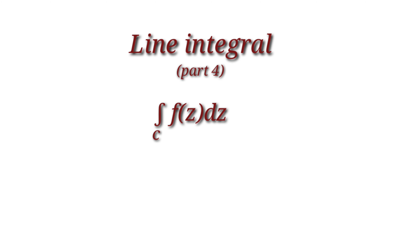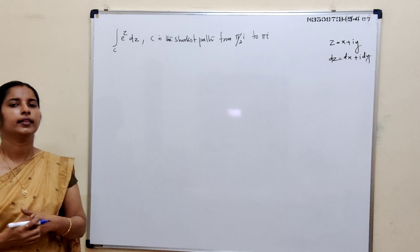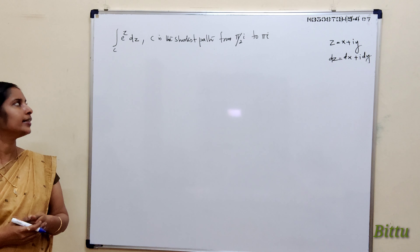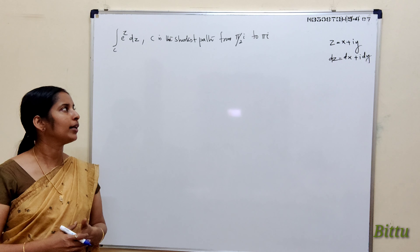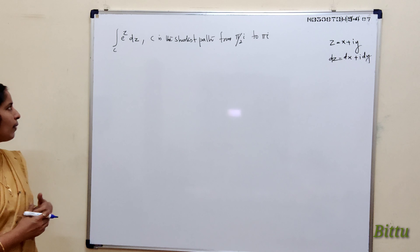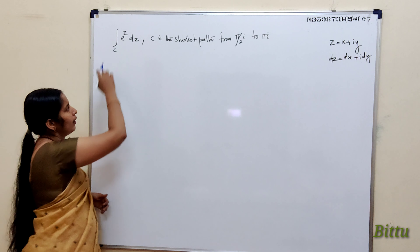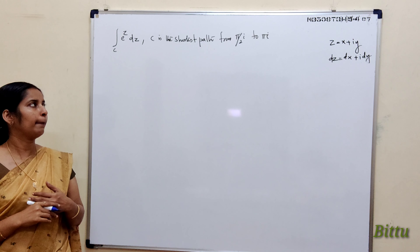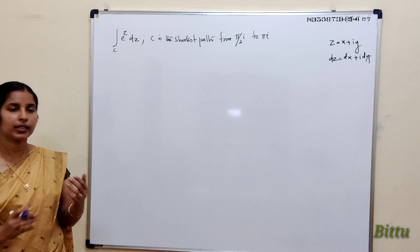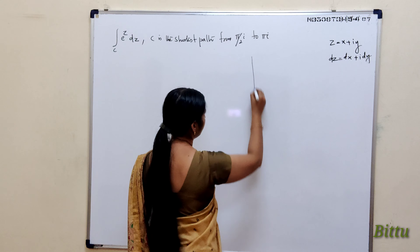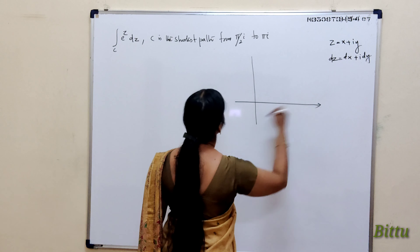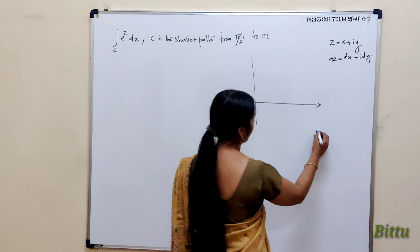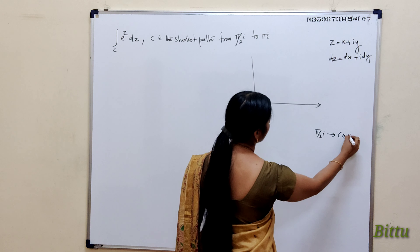Let me evaluate a very interesting question: integral over C of e^z dz, where C is the shortest path from πi/2 to πi. We have to evaluate the integral along the curve C, which is the shortest path from πi/2 to πi. First, mark the points: πi/2 is the point (0, π/2).